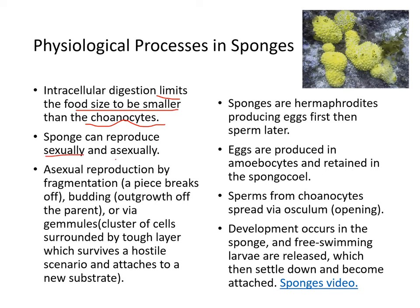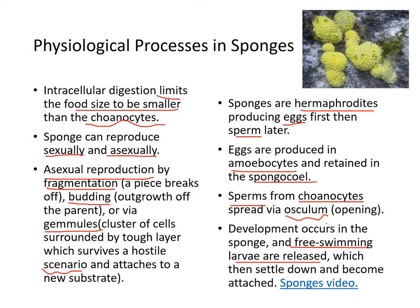Sponges can reproduce sexually as well as asexually. Asexual reproduction occurs by fragmentation — a small piece breaks off — or by budding, an outgrowth of the parent, or by gemmules, a cluster of cells surrounded by a tough layer that survives hostile conditions and attaches to a new substrate. Sponges are hermaphrodites, producing eggs first and then sperm later. Free-swimming larvae are released, which then settle and become sessile.